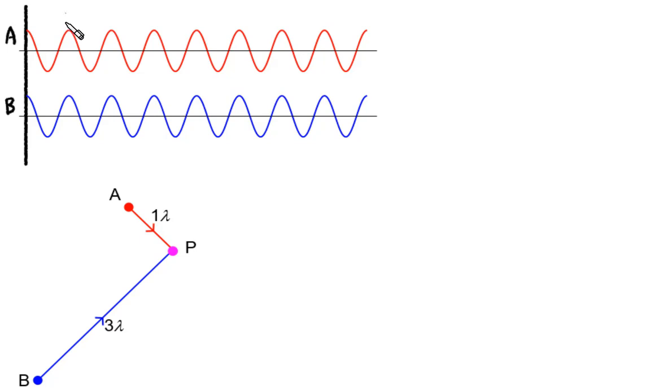So P is one wavelength away from A. And P is also three wavelengths. So one lambda, two lambdas, three lambdas. So P is three wavelengths away from B.